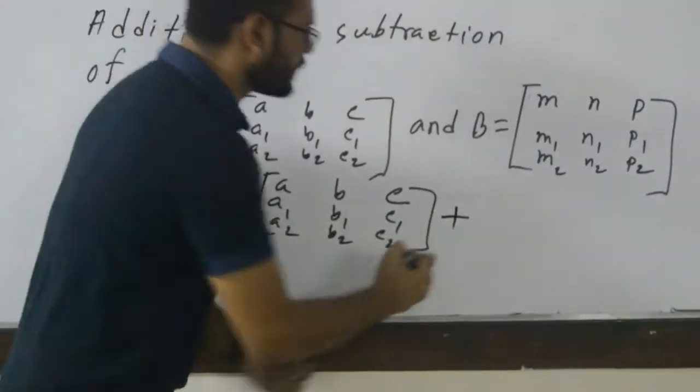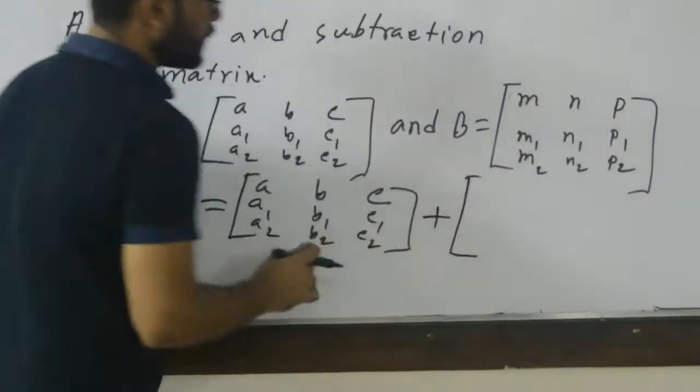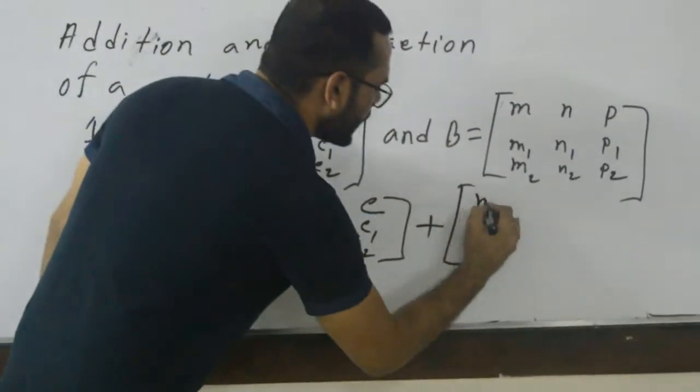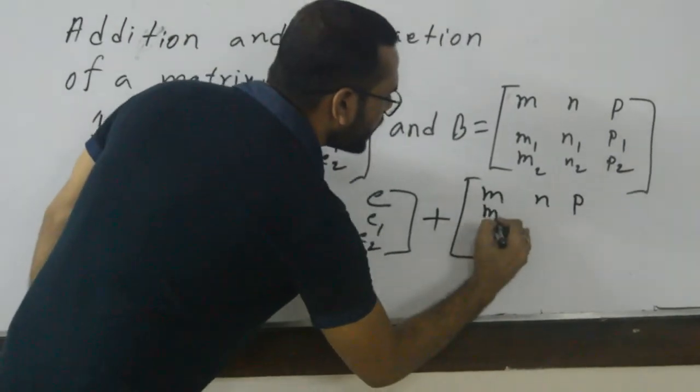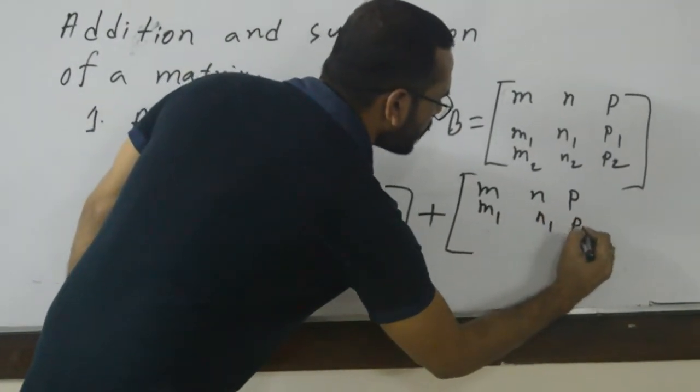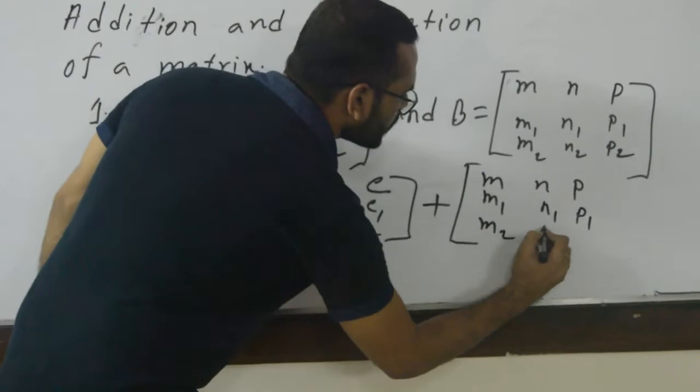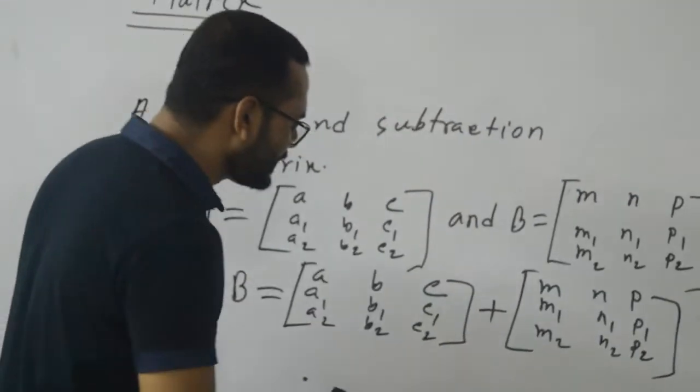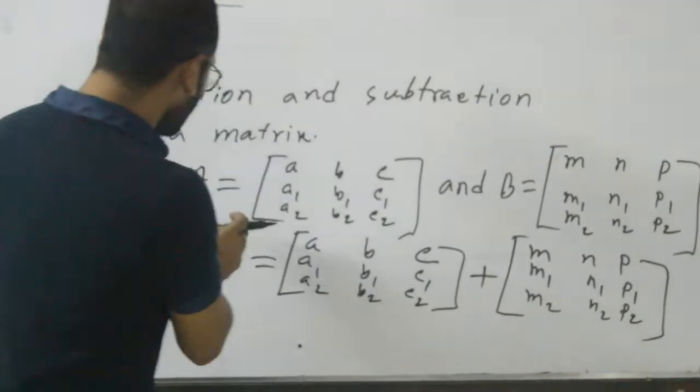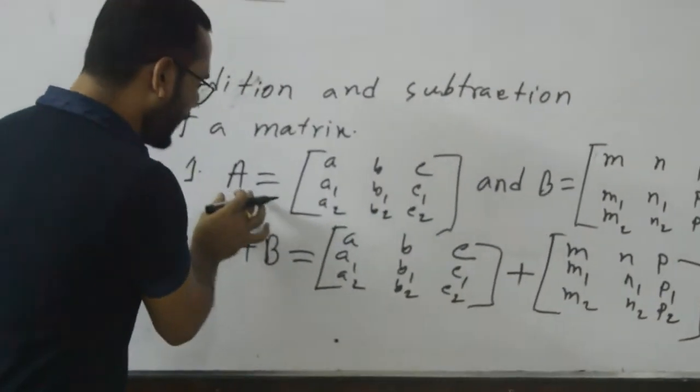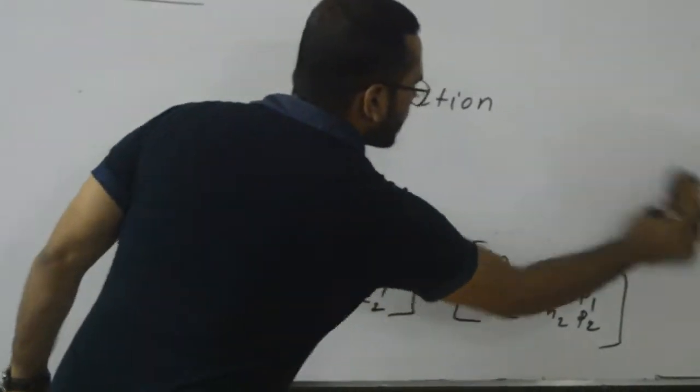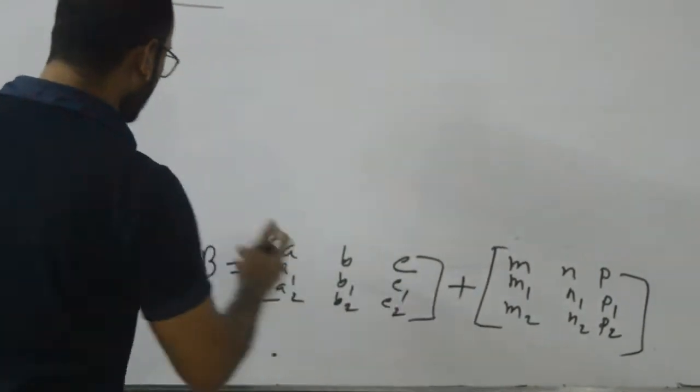So plus, and the entries of B in replacement of B: m, n, p, m1, n1, p1, m2, n2, p2. After writing these entries in replacement of A and B, we can easily add these two matrices.